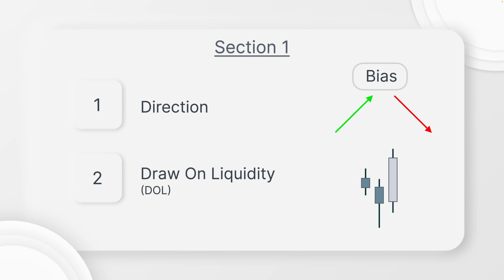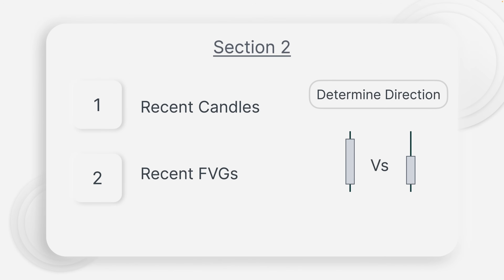Now that we've defined a bias, we move to section 2: determining the direction. The first step is paying attention to recent candles, and the second step is recent fair value gaps. On the right side of our screen we have one bullish candle on the left and one bullish candle on the right with 'versus' in the middle — can you spot the difference? They're both bullish but they tell us a different story and different direction.